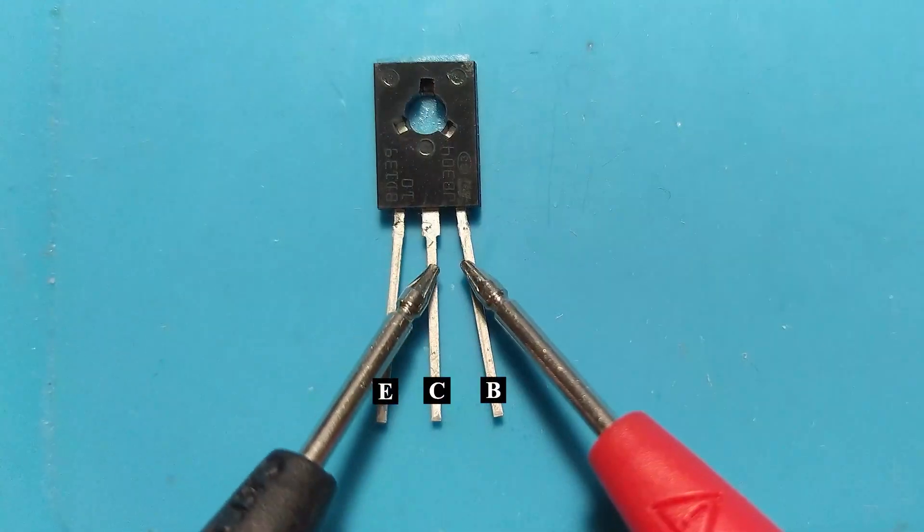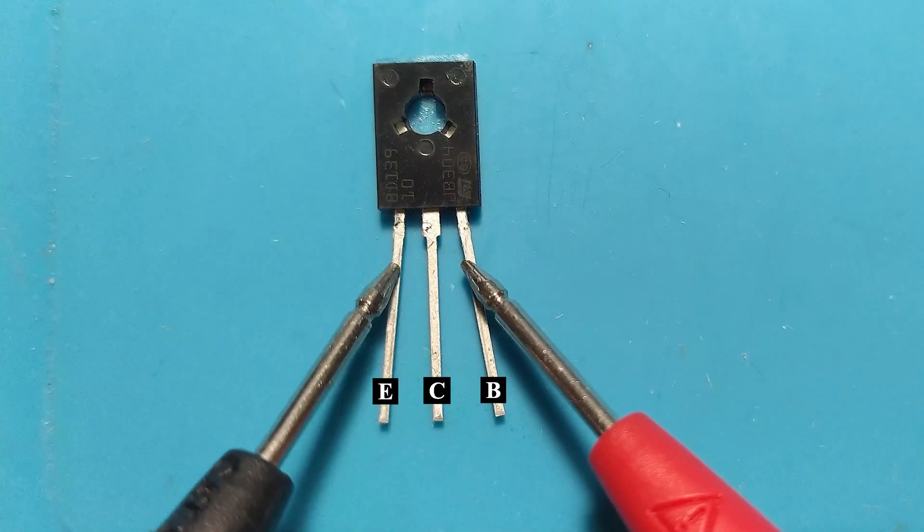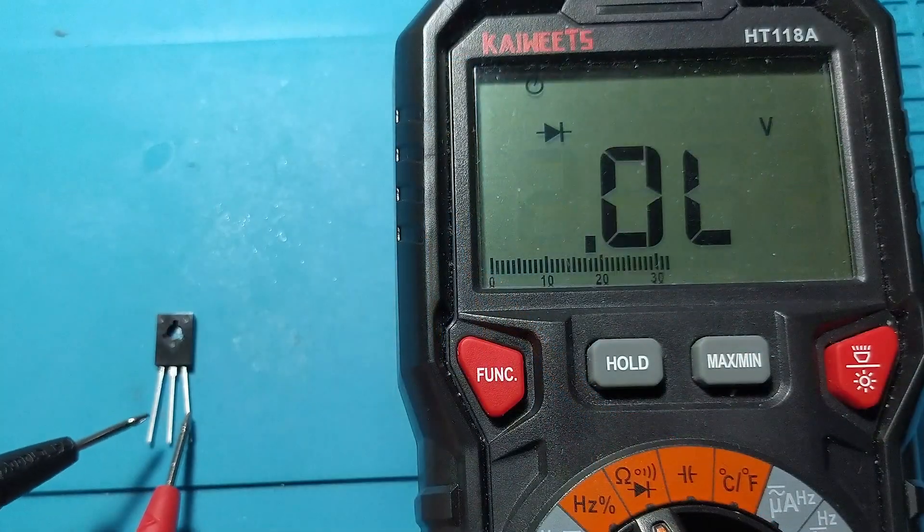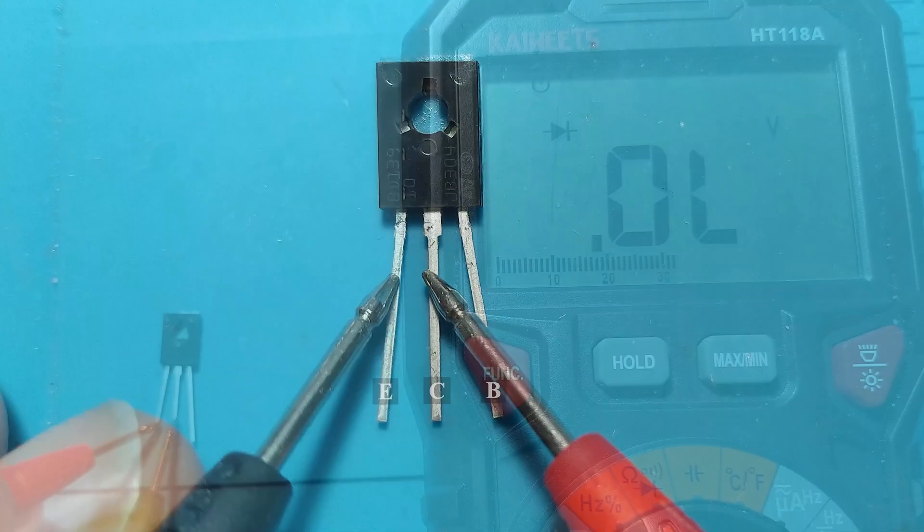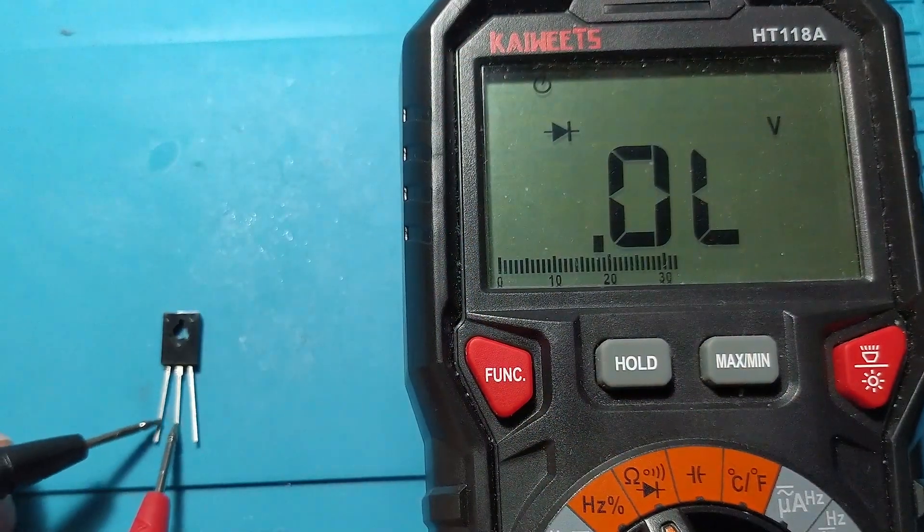With the red probe on the base and the black probe on the emitter or collector, we should have a voltage drop of about 600 millivolts. Measuring between emitter and collector, we should have no voltage drop, regardless of polarity.